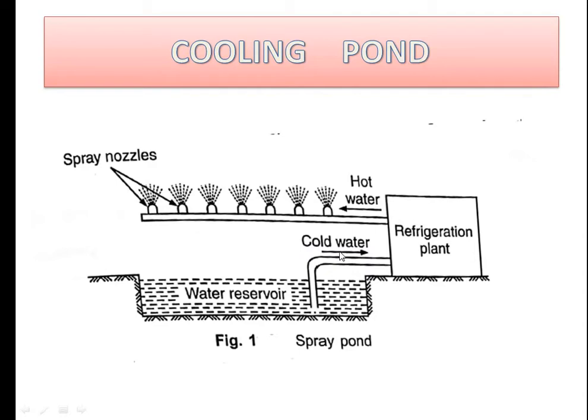The evaporation process takes place through a large surface area. The cold water is collected at the bottom of the reservoir and recirculated to the refrigeration plant where it can be used for the condenser.